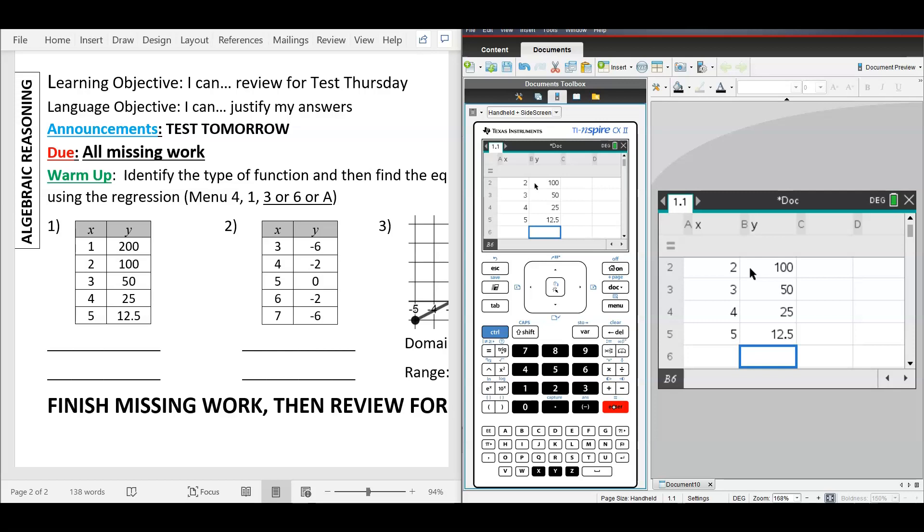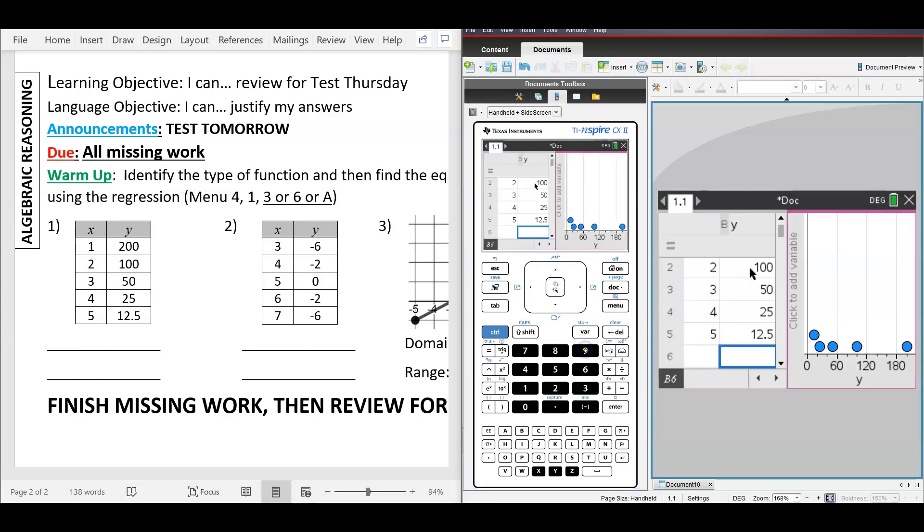Now, how do you get a scatterplot? What do I press? Menu something something is correct, but three nine is more correct. So once I get here, I need to make sure I click X on the bottom, Y on the top. Now, this is curving down. It looks like it'll flatten out. This could either be exponential or half of a quadratic.